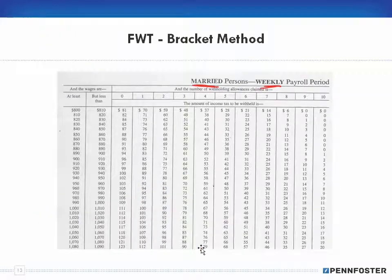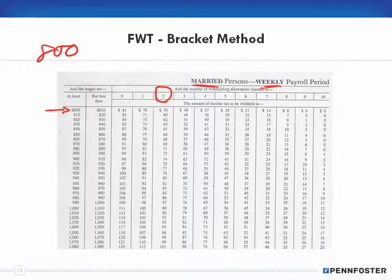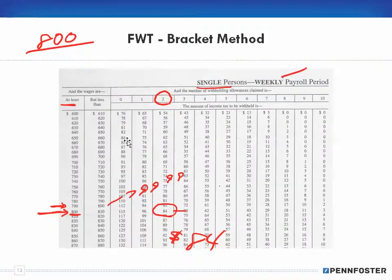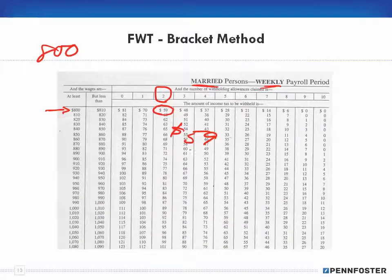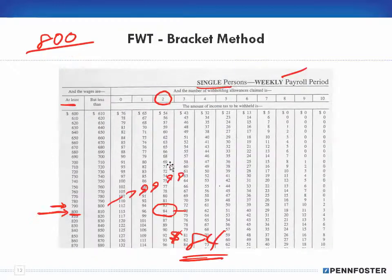Now using the married table with the same $800 wages, I come down to 'at least $800' and look at the two-allowance column. For married, only $59 is being withheld, compared to $84 for single. This is because with married and two allowances, as head of household you effectively have three people to care for, whereas single with two allowances covers only two. All these tables are adjusted accordingly.